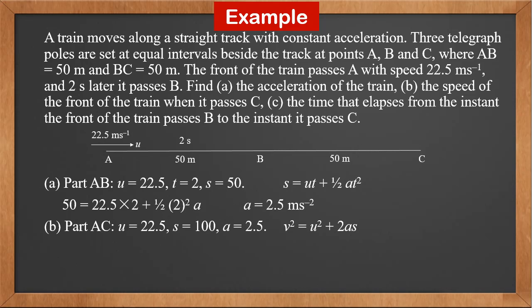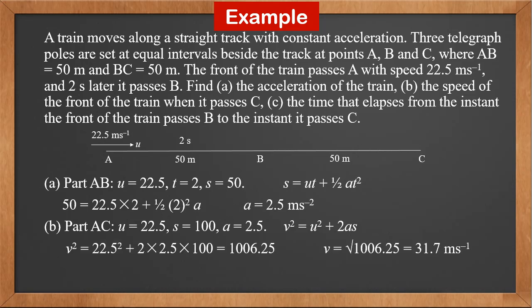For part AC, we know 3 values: initial velocity u is 22.5, displacement s is 100, and acceleration a, which we just found, is 2.5. We try to find the final velocity v. Using the formula v squared equals u squared plus 2as and putting in the values, we get v equals the square root of 1006.25, which is 31.7 meters per second.